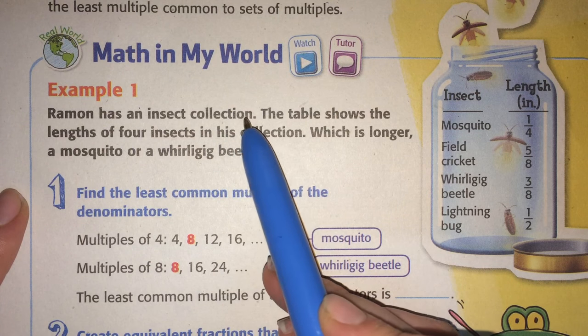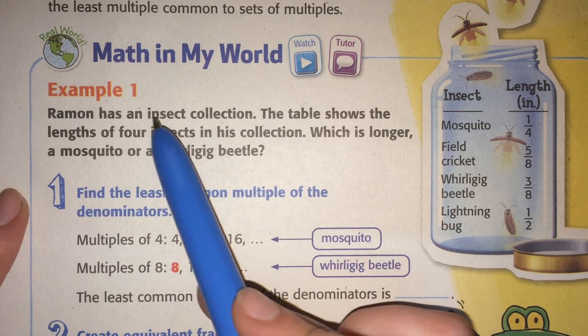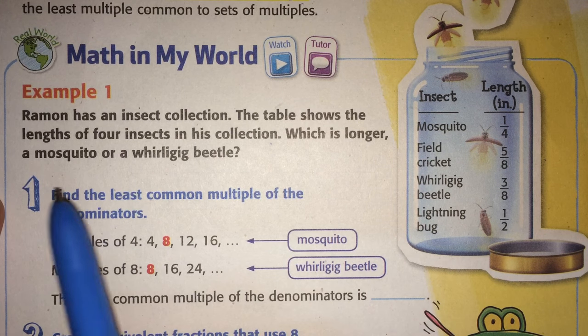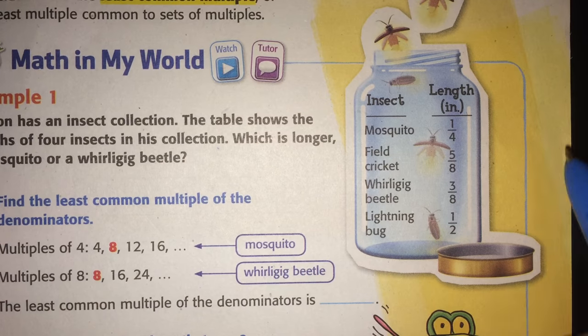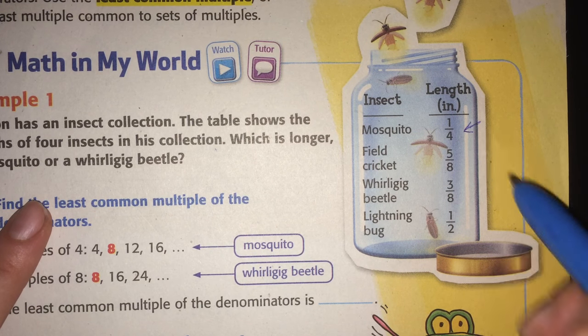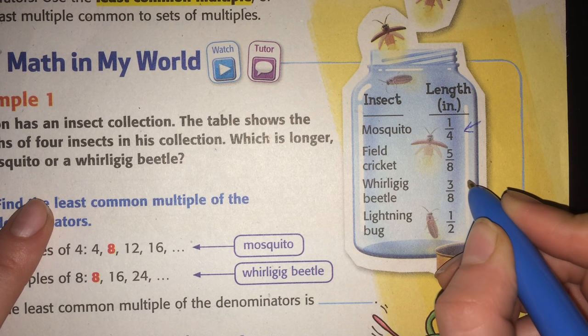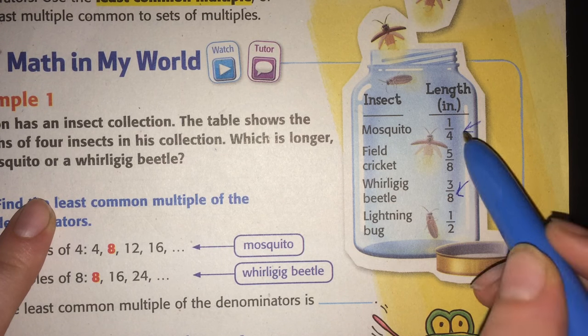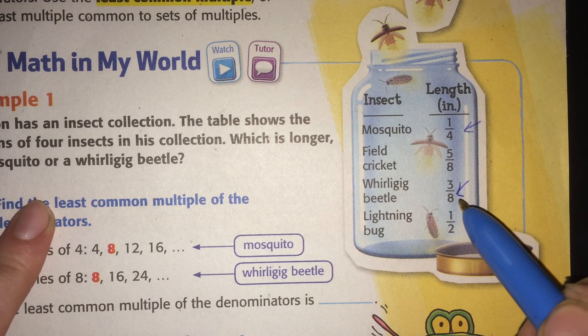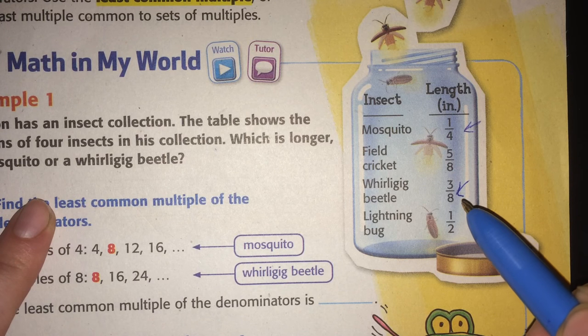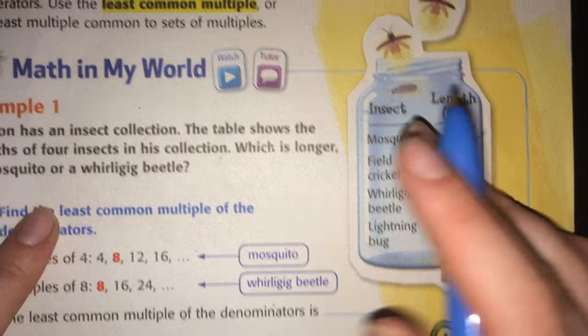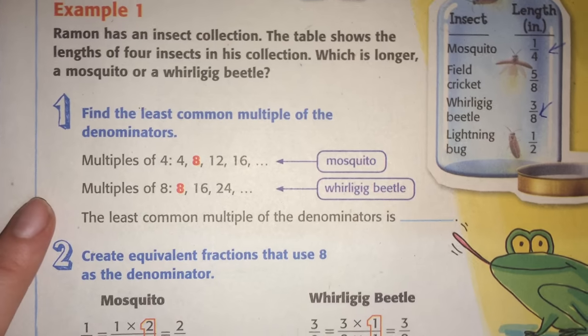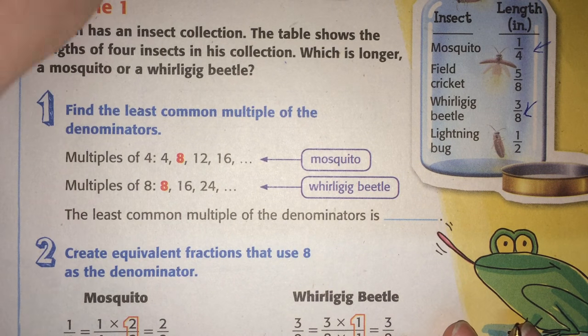Ramon has an insect collection. The table shows the length of four insects in his collection. See right here? Those are the lengths. Which is longer, a mosquito or a whirligig beetle? A mosquito, one-fourth inch, or a whirligig beetle? Now we can't tell which one is bigger by just looking at the eight or the four. You can't assume that the eight is bigger just because the number is bigger. These fractions need to either have the same denominator or the same numerator to compare. So what do we do then?